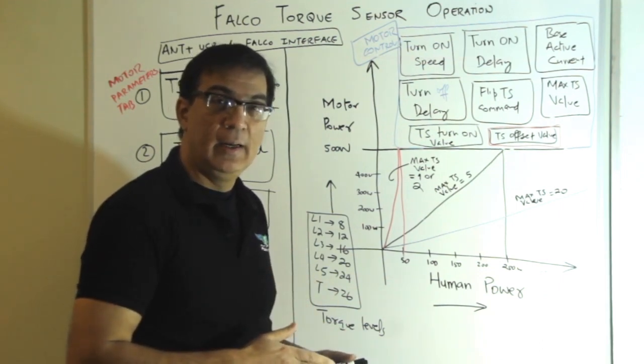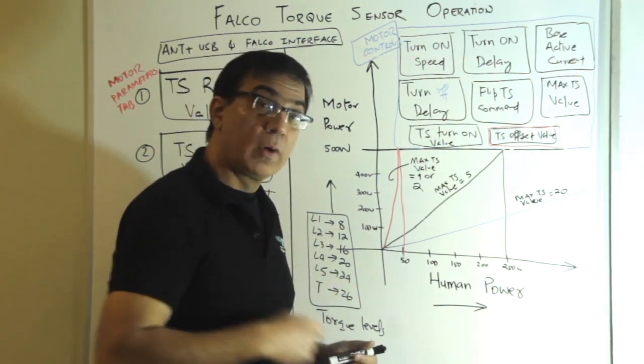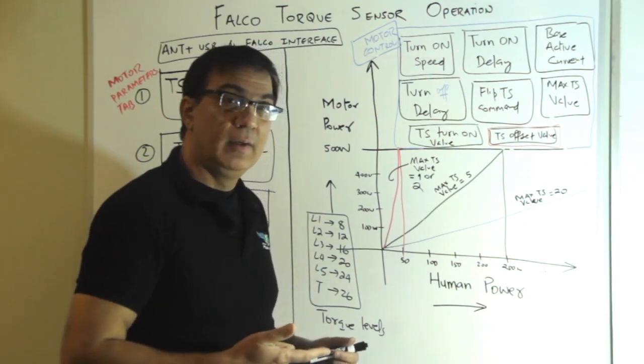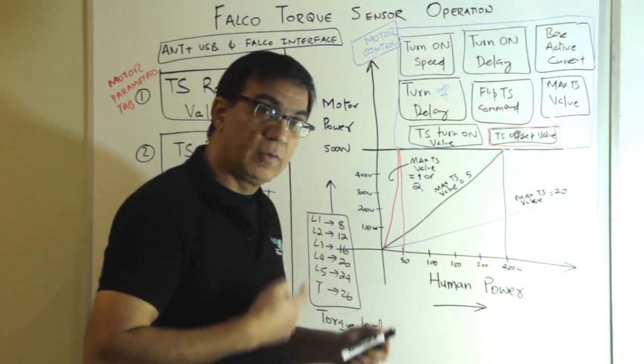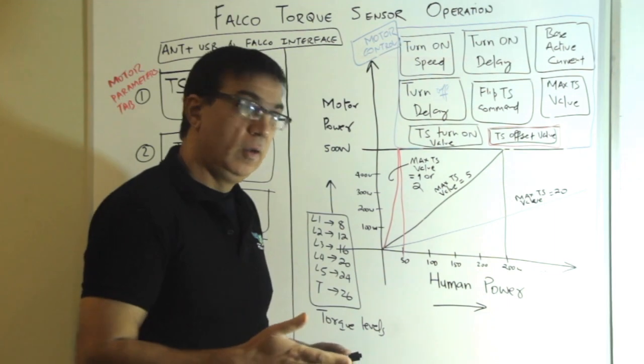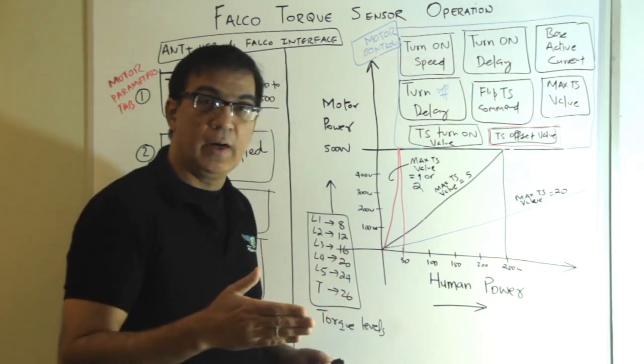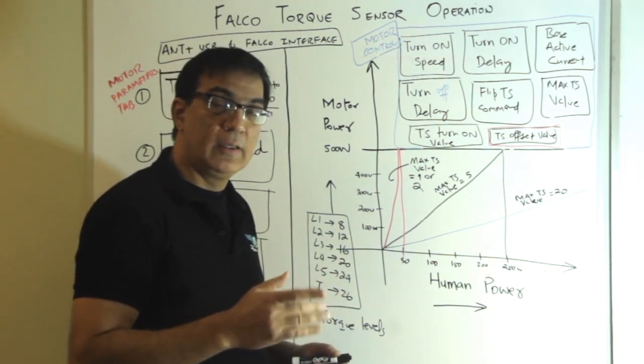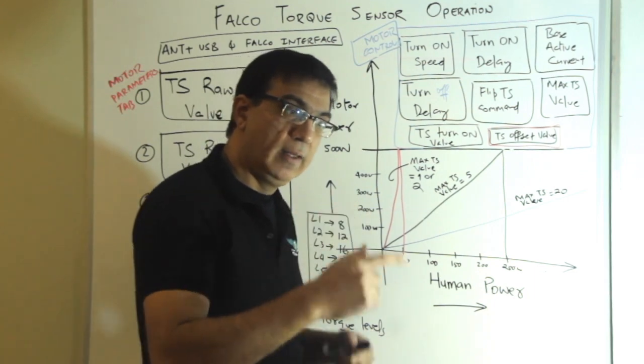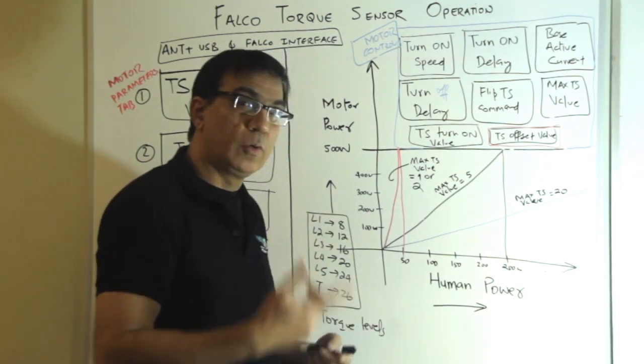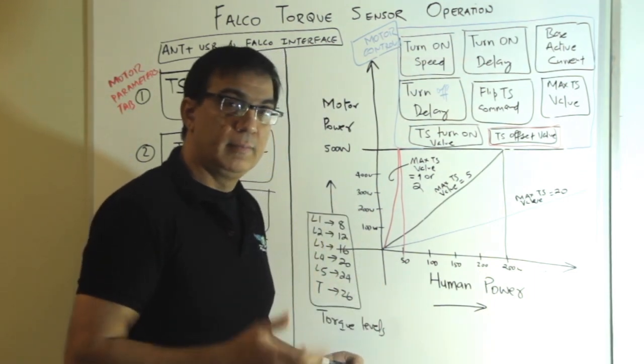However, since the motor computes the speed very fast, it is not a slow computation of the speed, it's a fast computation of the speed. So if you set it high, 150 RPM, then the torque sensor is going to turn on when the motor thinks that it's rotating at 150 RPM.